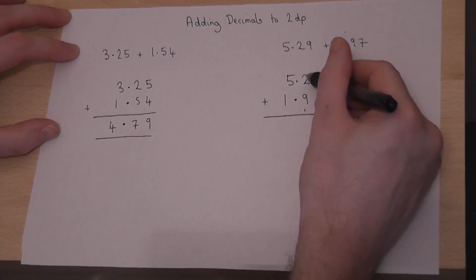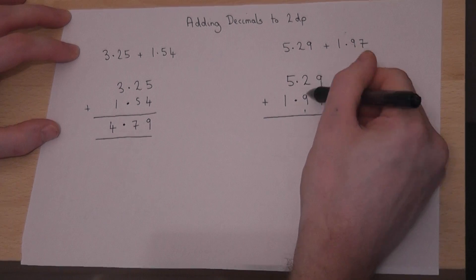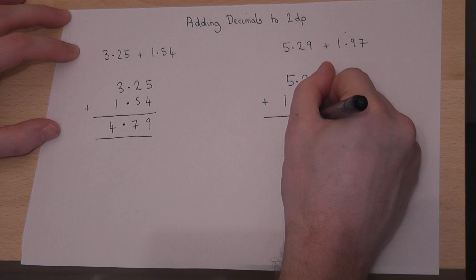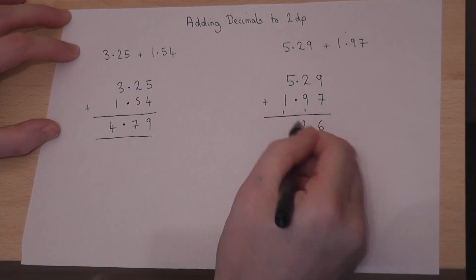When we then add up this column, we add up all those three numbers there. So 2 plus 9 is 11. Plus 1 is 12. So there's the 2. Carry the 1. 12.